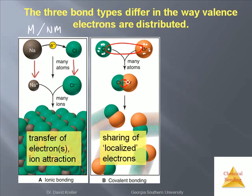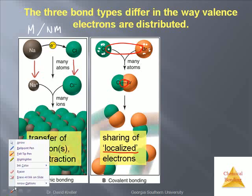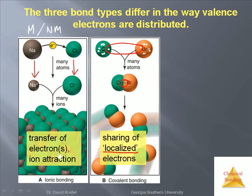Electrons are shared, and we describe the bonding using the word localized. The electrons really exist primarily in the internuclear region and nowhere else. This material wouldn't conduct electricity. These electrons aren't really moving around; they're localized in this internuclear region. Covalent bonding occurs when you have a non-metal interacting with a non-metal.